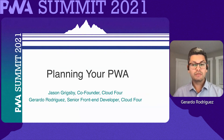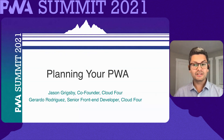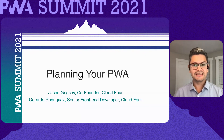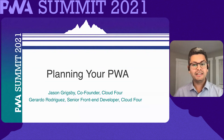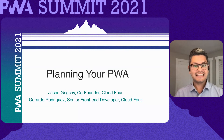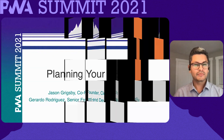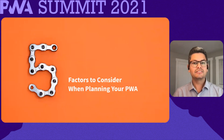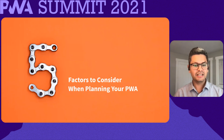When someone says they want a progressive web app, it's hard to know what that means, let alone put together a plan to make it happen. PWAs cover a wide range of experiences. They can be as simple as a website on HTTPS with a manifest file and a service worker, or they can be a complex application like Instagram or TikTok. In order to put a plan together, you have to know what you're building. We've found it helpful to consider five factors when looking at the features and complexity of your PWA.